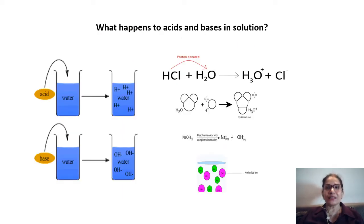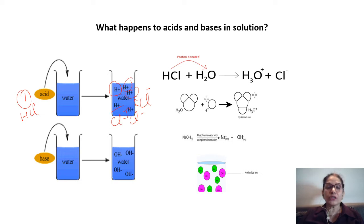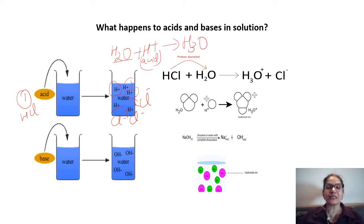When an acid is added to water — take hydrochloric acid — there will be a number of H+ ions and also chloride minus ions in solution. These water molecules, formula H2O, will combine with the H+ ions coming from the acid and form H3O+ ions, known as hydronium ions.